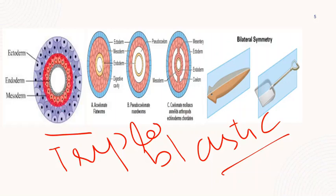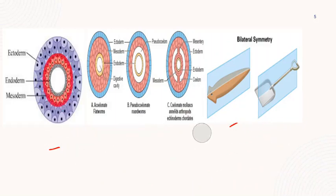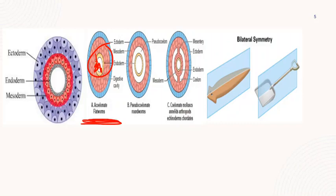Now, what does acoelomate mean? A coelom is actually a body cavity that has many organs suspended in it. Platyhelminthes do not have this body cavity — they are acoelomates. As you can see in the diagram, this is our acoelomate structure, and they do not have the coelom, as you can see clearly.